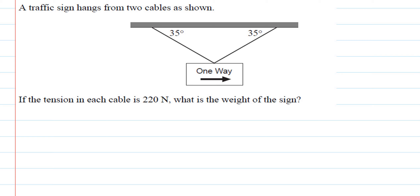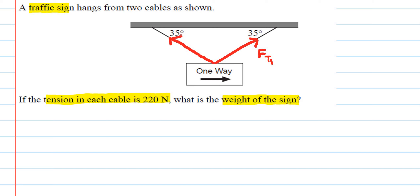Let's do another similar problem. We have a traffic sign hanging from two cables, and the tension in each cable is 220 newtons. We want to find the weight of the sign. Step one is to draw a free body diagram: FT1 for the first cable force, FT2 for the second, and FG acting downward for the weight of the sign.